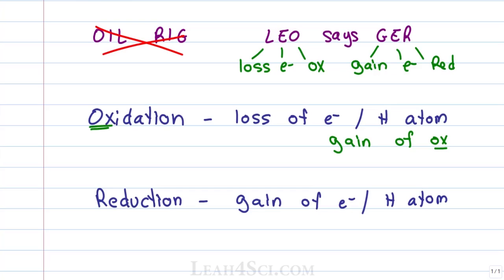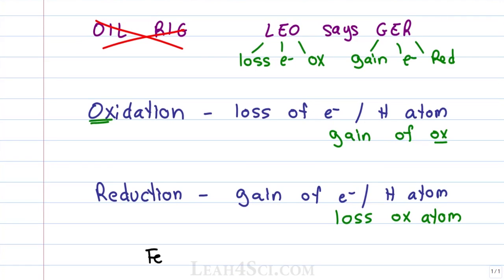Reduction, which is the gain of a hydrogen atom, can also be the loss of an oxygen atom. But there's one more method you're used to recognizing for oxidation and reduction, and that is the oxidation number or the change in oxidation number. For example, if I have the ion Fe2+ reacting to form Fe3+, you've probably learned that when the oxidation number goes up, that is oxidation.